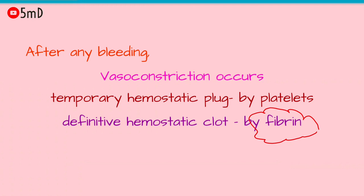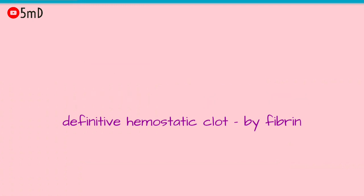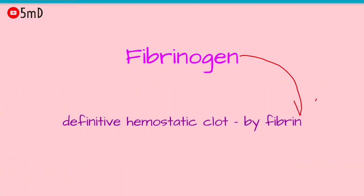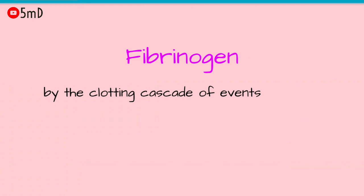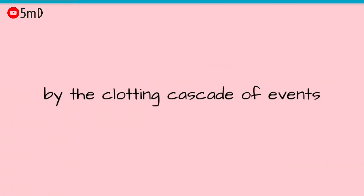Fibrin is formed from a soluble protein in the plasma called fibrinogen. Let us see the series of events which leads to the formation of fibrin in a clotting pathway. There are about 13 clotting factors involved in the clotting mechanism, but before seeing their names, let us see them as their numbers and see the pathway by which they act.